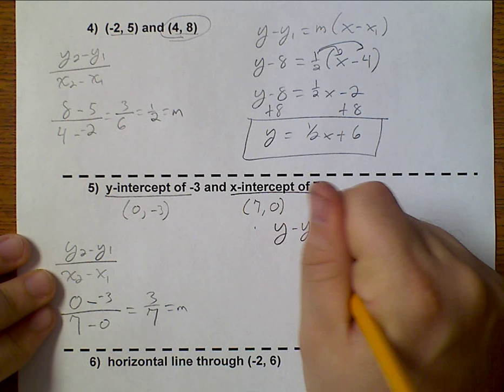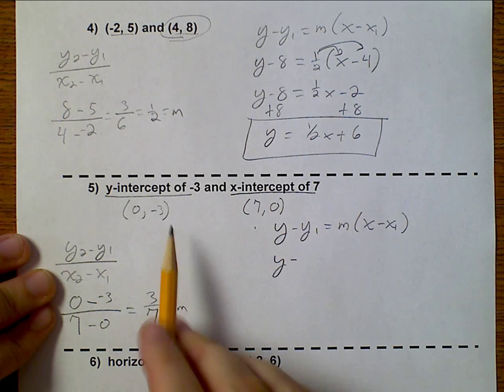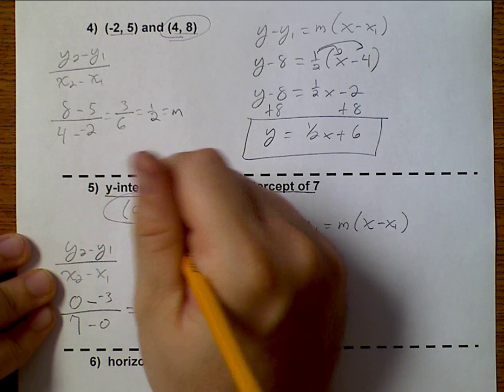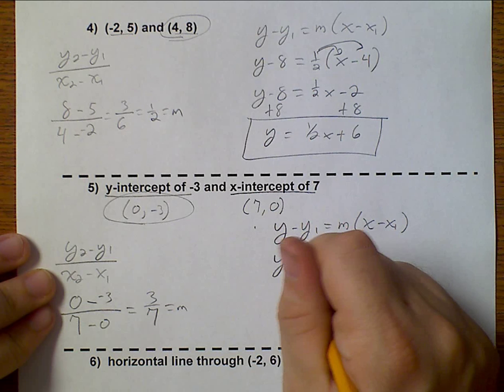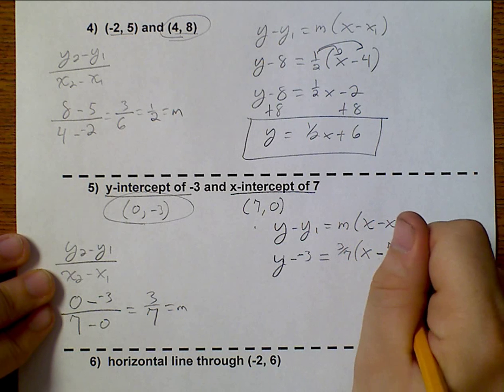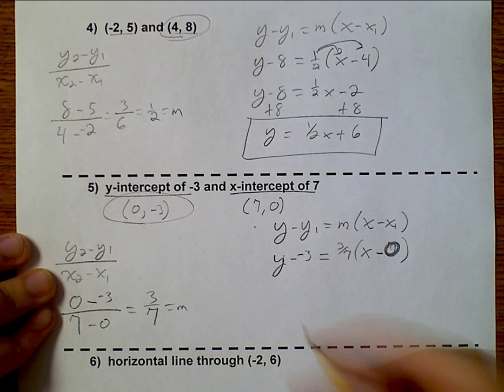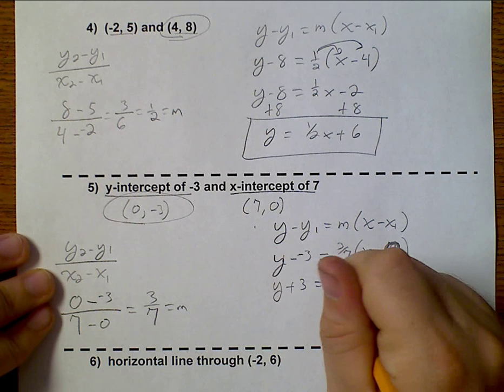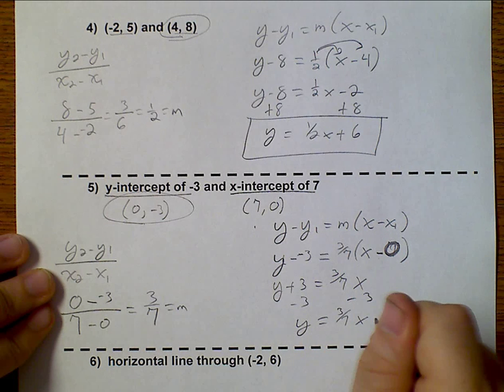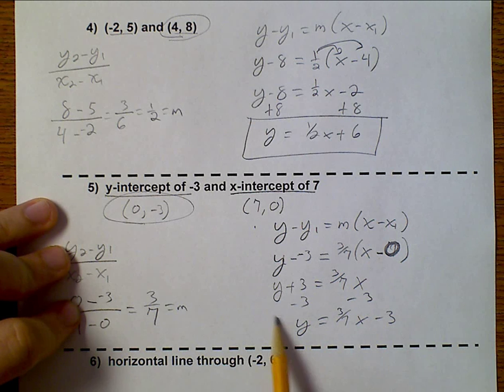y minus y1 equals m times x minus x1. So y minus—I'm going to go ahead and use this one—so y minus negative 3 equals 3 sevenths x minus 0. So I'm using this point right here. This becomes y plus 3 equals 3 sevenths x. I subtract 3 on both sides, and y equals 3 sevenths x minus 3.